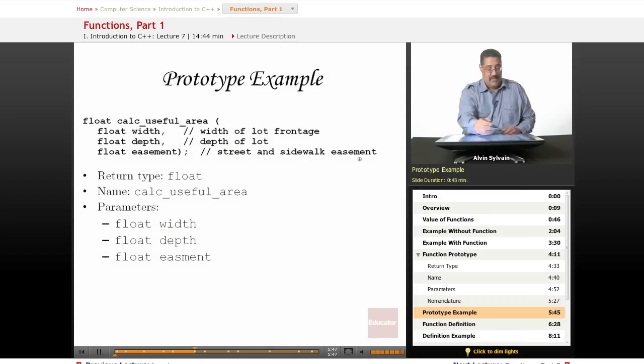Here's an example of a prototype. We're returning a float. We're going to calculate the useful area. We need the width passed in, the depth passed in—these are each floats—and the easement passed in, which is also a float. Here we have a good example where each variable has a comment that says what this parameter is for. Return type is float, the name of the function is calculate useful area. Then we've got our parentheses which include each of the three parameters that have to be passed into this function.